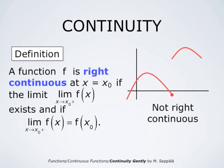Likewise, we say that a function is right continuous at some point x₀ if the limit of f(x) as x approaches x₀ through numbers larger than x₀ exists and this limit agrees with the value of the function. The red graph is a graph of a function that does have the right limit at the point where it jumps, but the right limit is not the value of the function at that point. Therefore, this function is not right continuous at the point where its values jump.